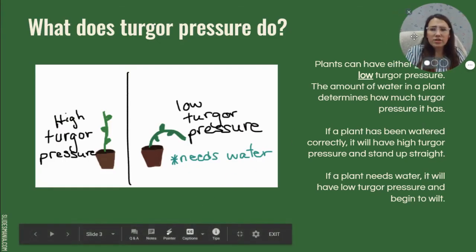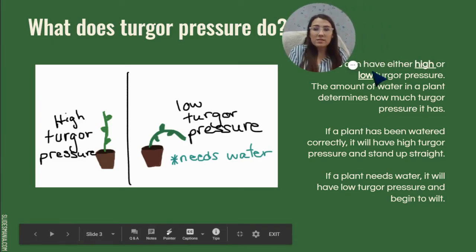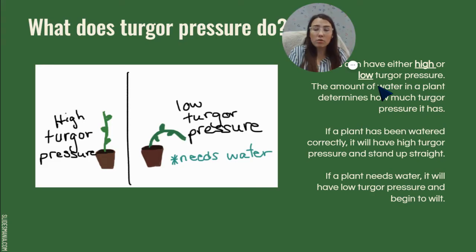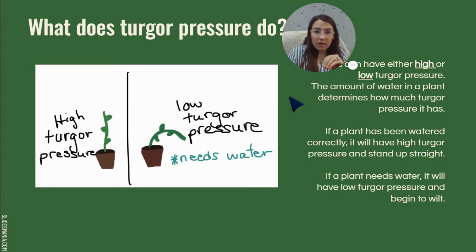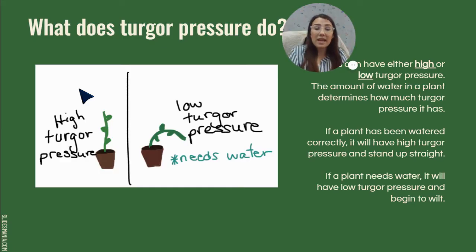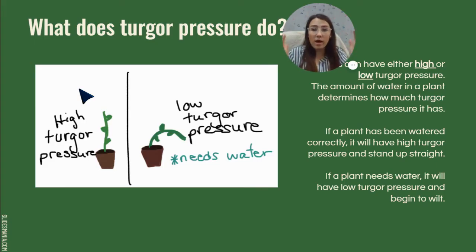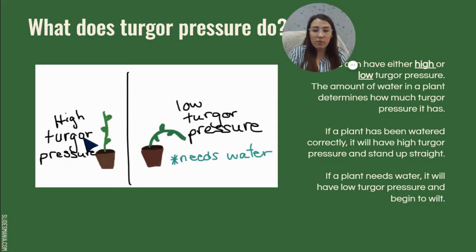So what does turgor pressure even do? Plants can have high or low turgor pressure — it depends on how much water they have in them. If a plant has been watered correctly and has enough water, it will be rigid and stand up straight like you see in the picture. If the plant does not have enough water, its cells start to kind of deflate because there's nothing to hold them up. That's when your plant starts to wilt and lean over. So with high turgor pressure it has enough water; with low turgor pressure it does not have enough water.